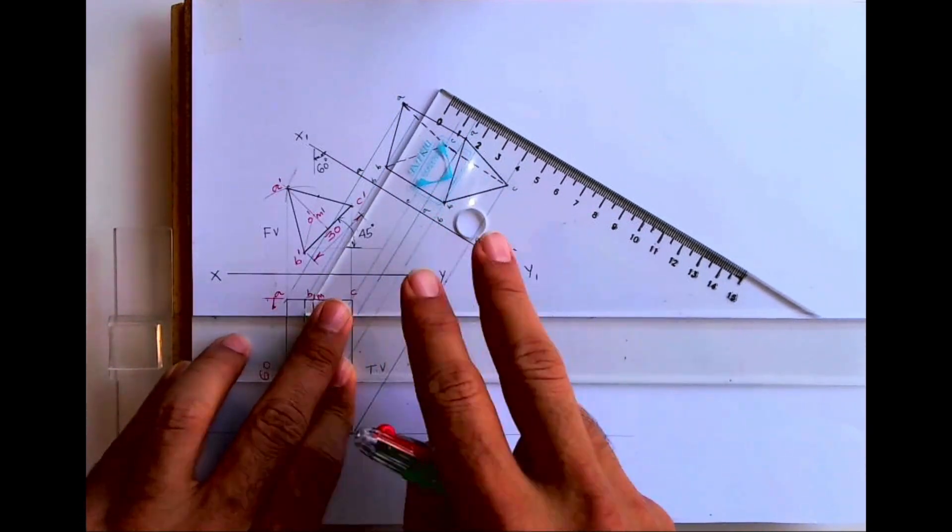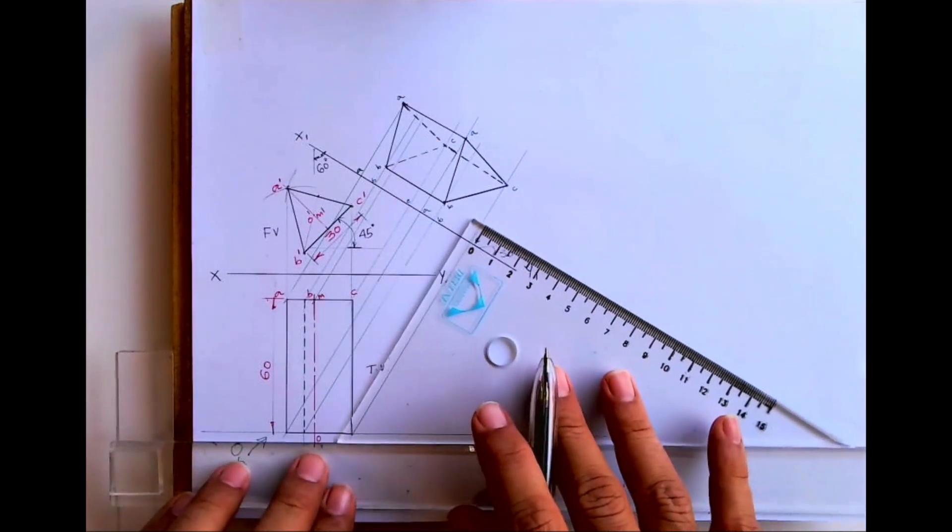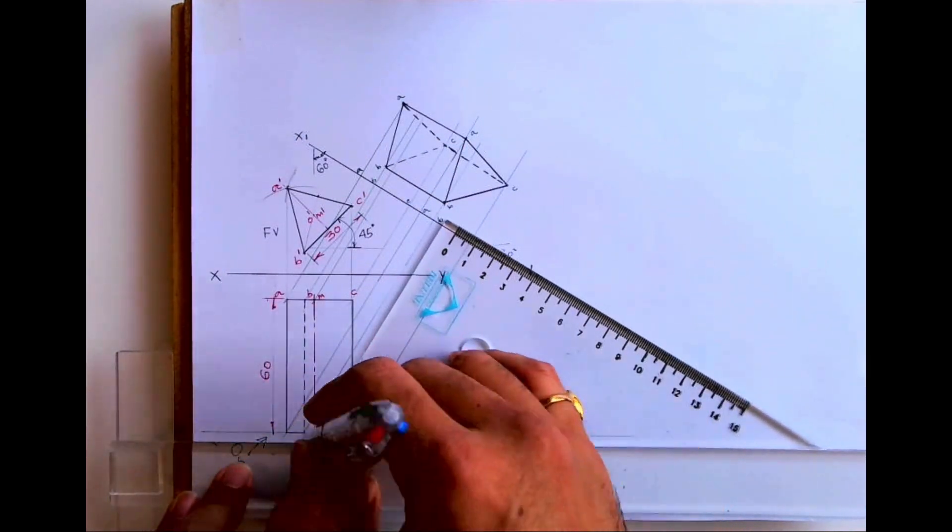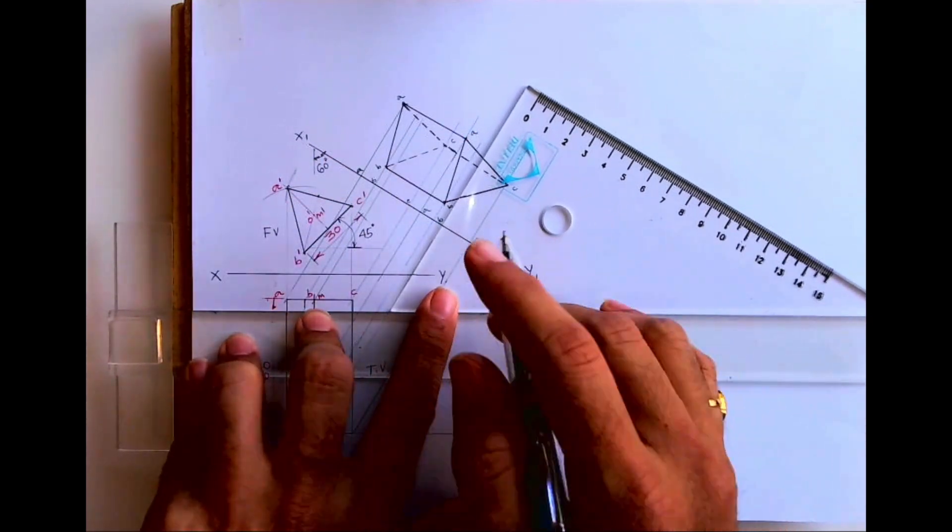Then you draw 60 degree like this. Always remember, it will be perpendicular line to the auxiliary line, that X1, Y1.